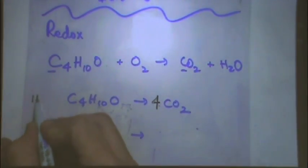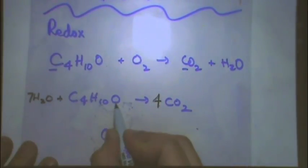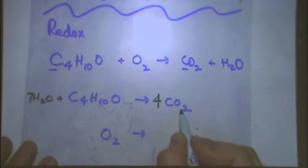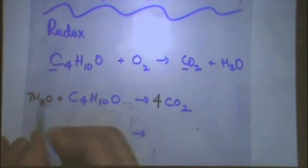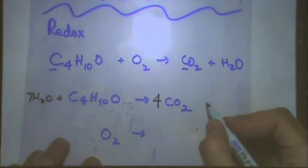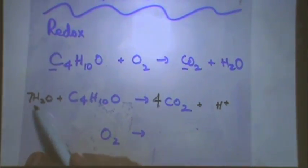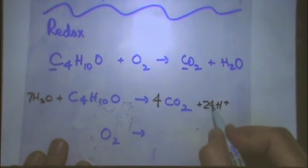Let's try to balance the top one. Step one, balance whatever is not oxygen nor hydrogen. So, I'm going to balance the carbon, put a four there. Step two, balance the oxygens with water. Here's where the water magically shows up. So, how many waters will I add here? Seven, right? There's one oxygen there and there's eight here. So, seven waters.